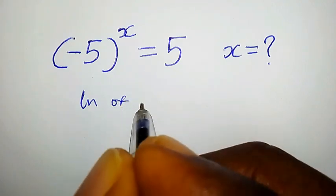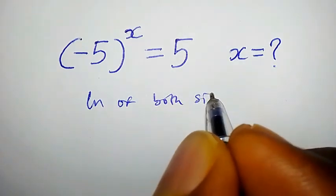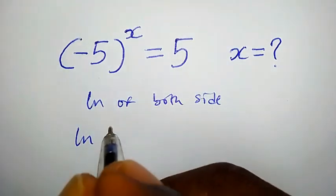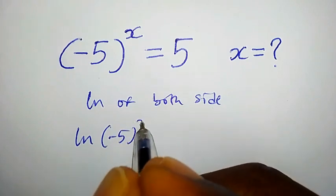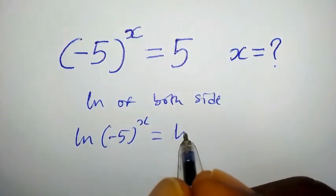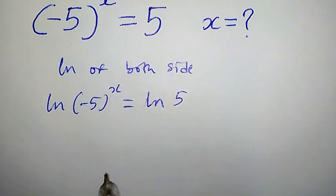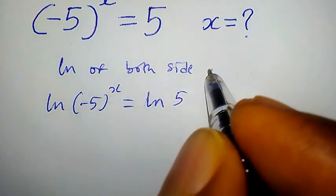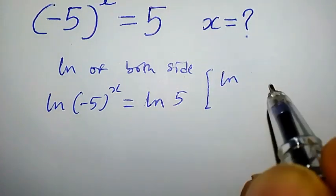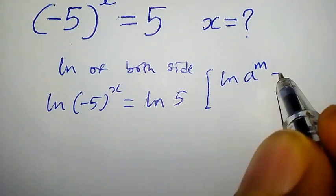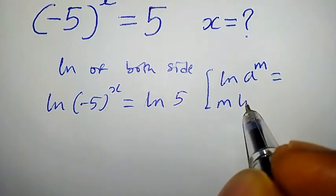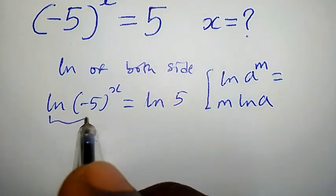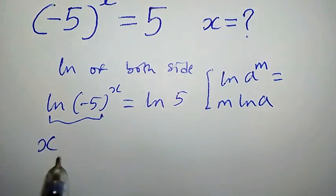Taking ln of both sides, we have ln((-5)^x) = ln(5). From one of the rules of logarithm, there is the property which says ln(a^m) = m · ln(a). Applying this property to the left-hand side, we have x · ln(-5) = ln(5).